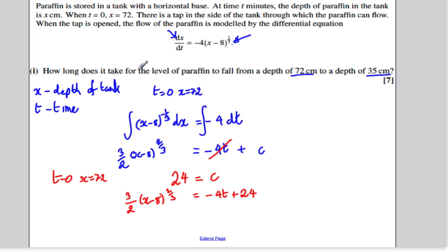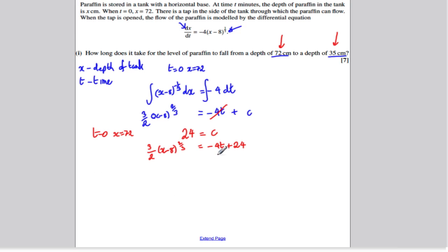So it wants us to work out the time it takes to fall from x is 72 to x is 35. So we need to find t when x is 72 and x is 35. So let's put in x is equal to 72 in here.